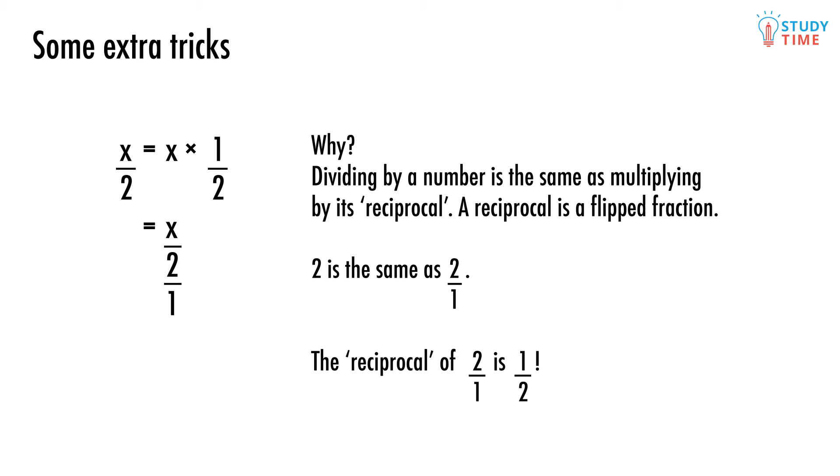This goes for any number of course. So dividing by the secret version of 2, 2 over 1, is the same as multiplying by its reciprocal, 1 over 2, which is just 2 over 1 flipped around. You won't believe how handy this little bit of knowledge is.